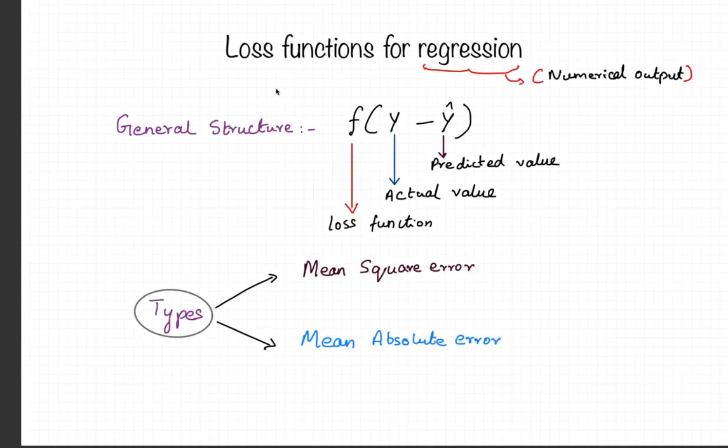In this short lecture I am going to discuss different loss functions used for regression. The general structure of a loss function is a function of the true value and the predicted value. Two common types of loss functions used in regression are the mean square error and the mean absolute error.